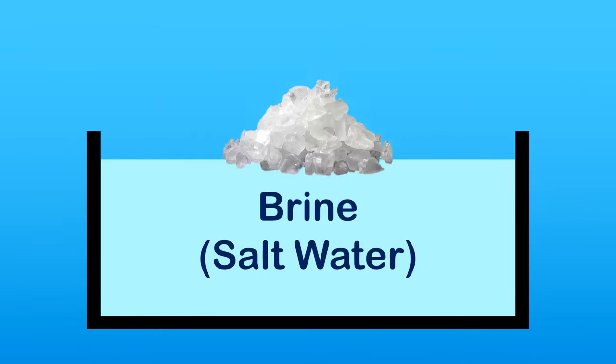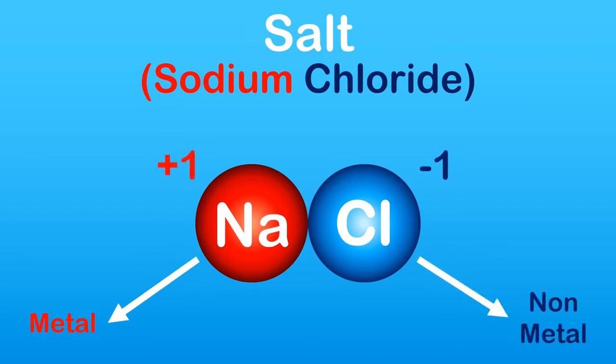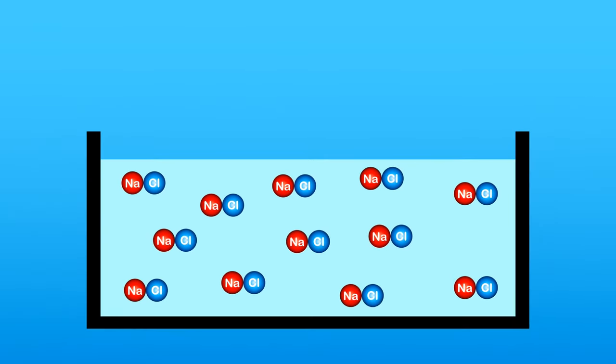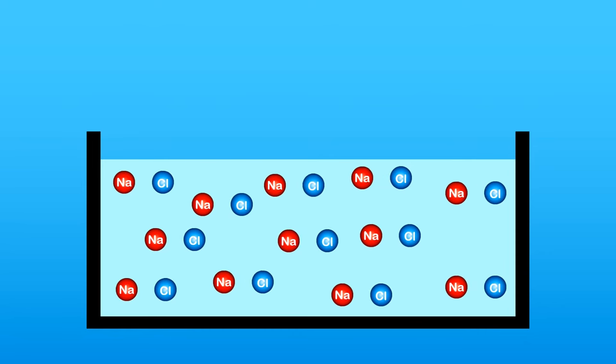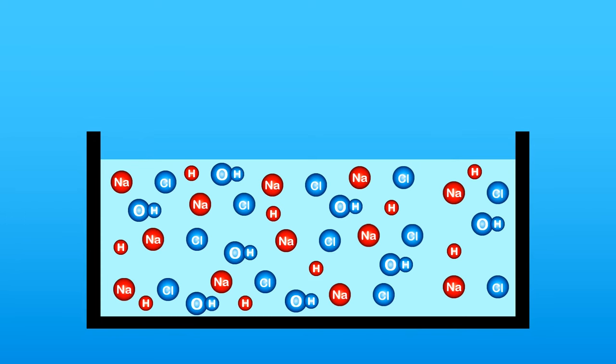This video looks at the electrolysis of brine or salt water. Table salt, the salt we put in our food, is sodium chloride, the sodium being the positive metal ion with a charge of plus one, and the chlorine being our non-metal ion with a charge of minus one. When sodium chloride dissolves in water, it splits into a positive sodium ion and a negative chloride ion, in addition to our hydrogen and hydroxide ions from the water.